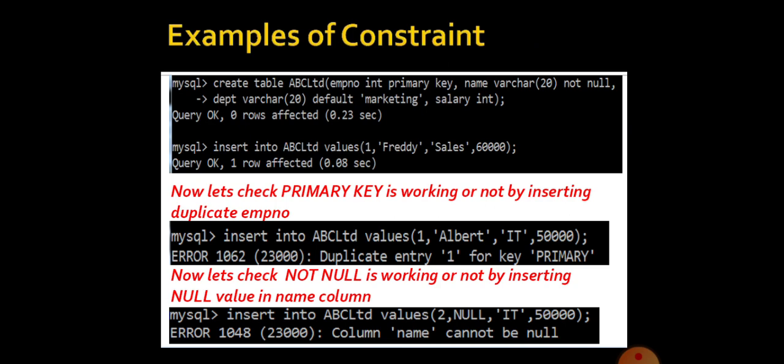So one thing you have to remember: while you are giving primary key, you are not supposed to give duplicate values or null values. And for not null constraint, we are not supposed to give null values in that particular column.